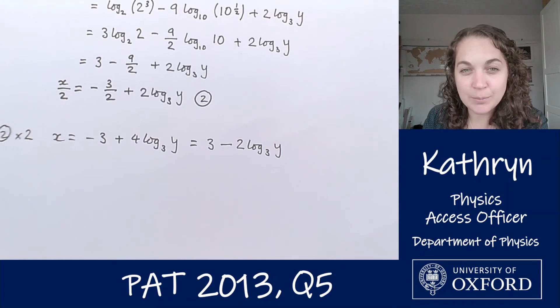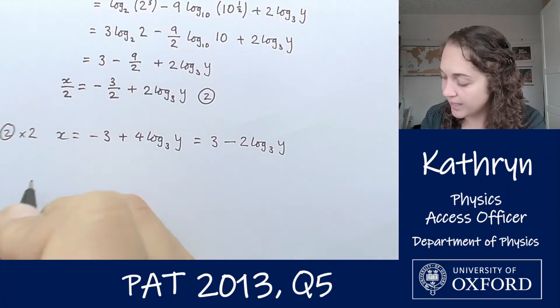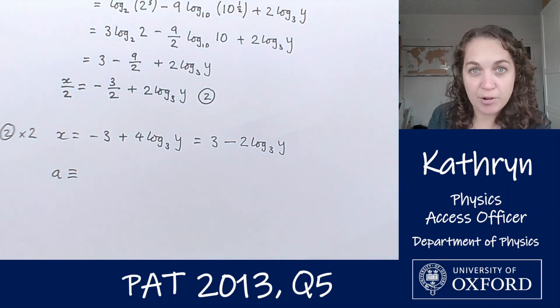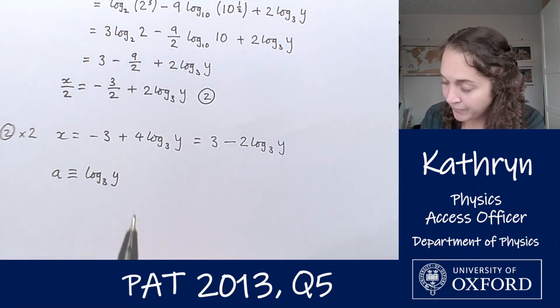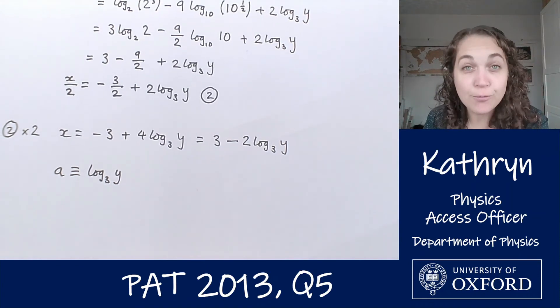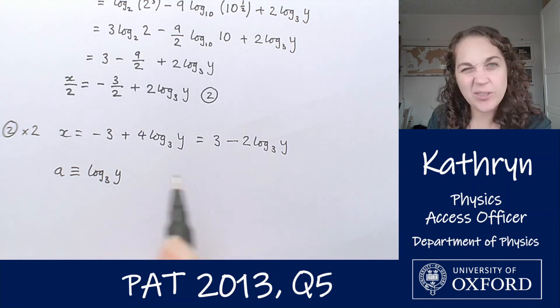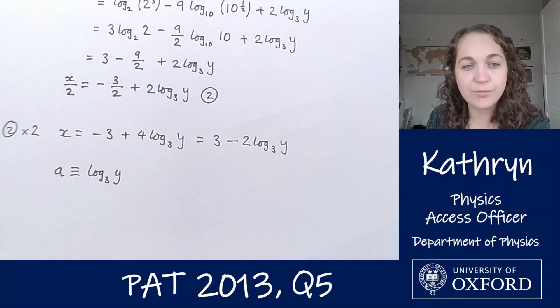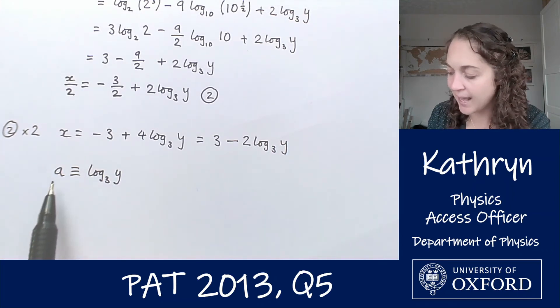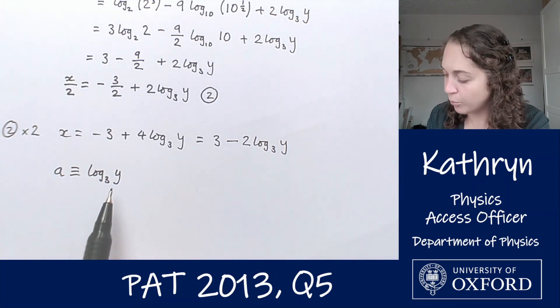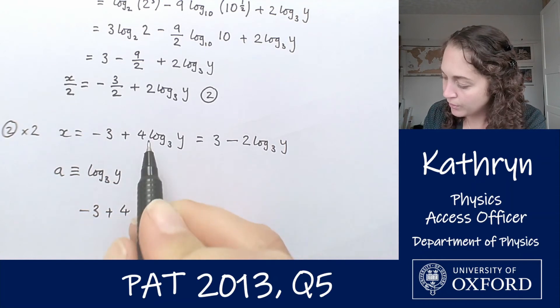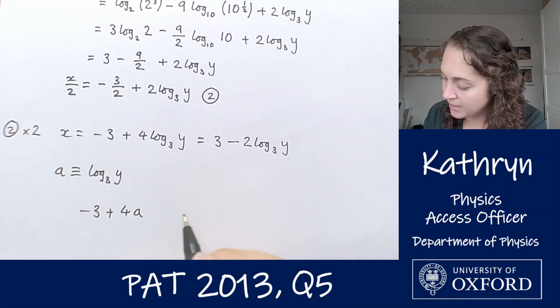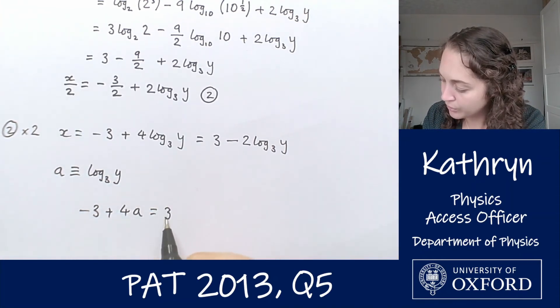At this point to make it look a little bit simpler I'm going to define a variable a as log base 3 of y. This is not something you would have to do, for me this makes it simpler to see what's going on. So I've got minus 3 plus 4a equals 3 minus 2a.